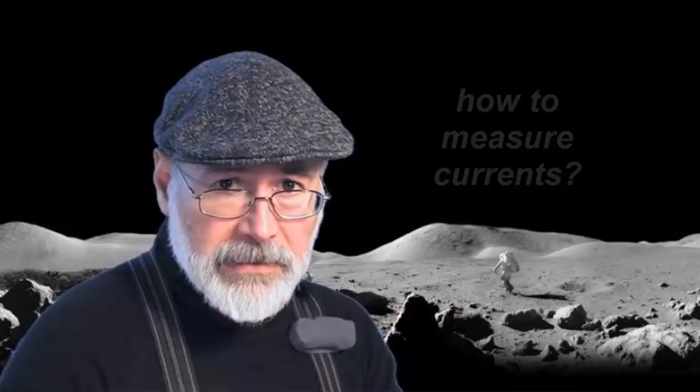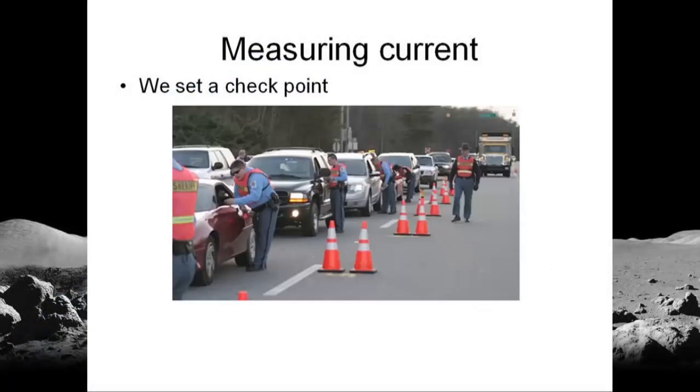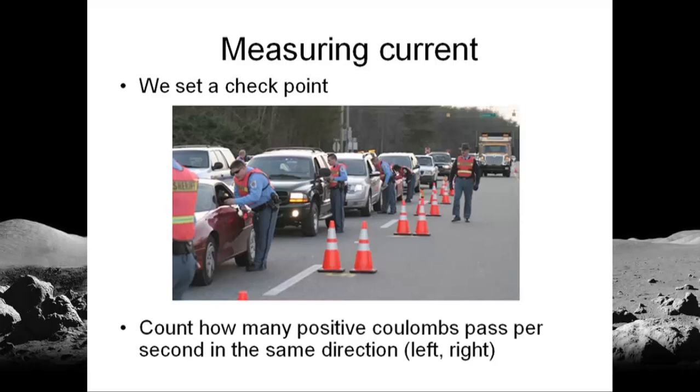We begin this video today addressing the question, how do we measure currents? To measure current, what we do is we set a checkpoint, like a traffic checkpoint. However, instead of counting cars and passengers, we count positive coulombs that pass per second in the same direction, to the left or to the right.